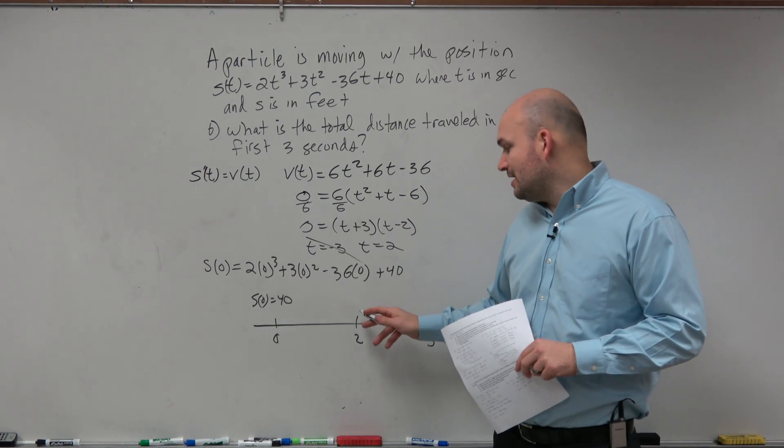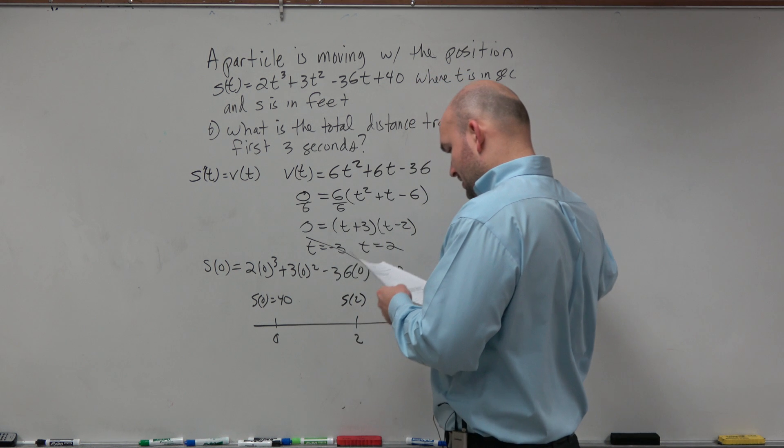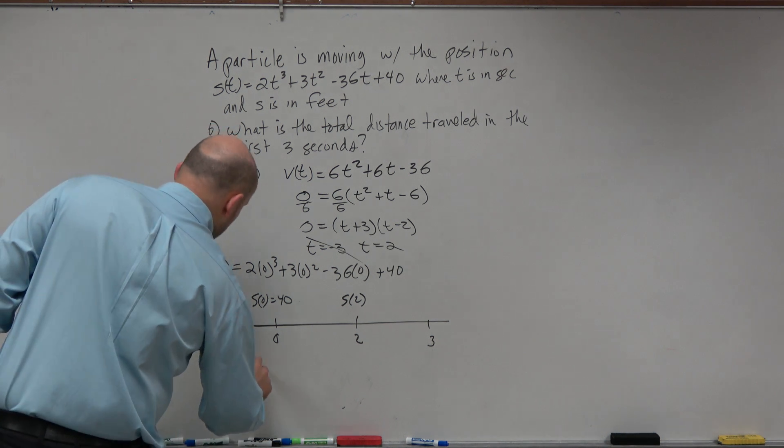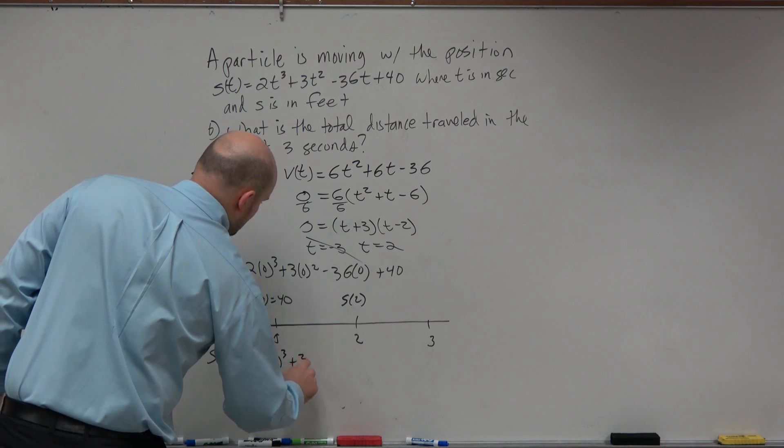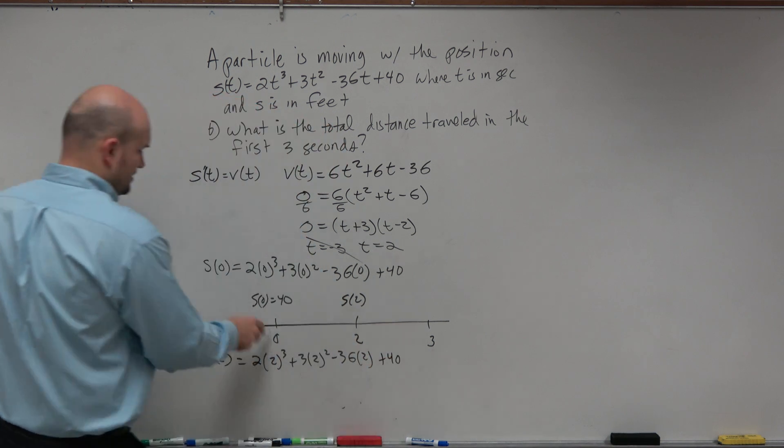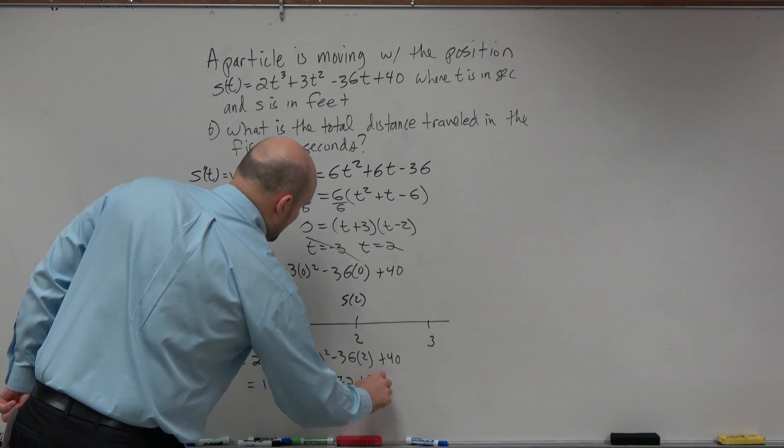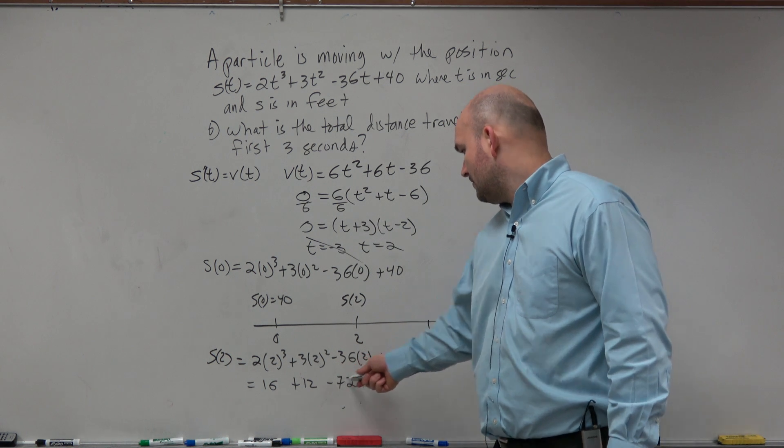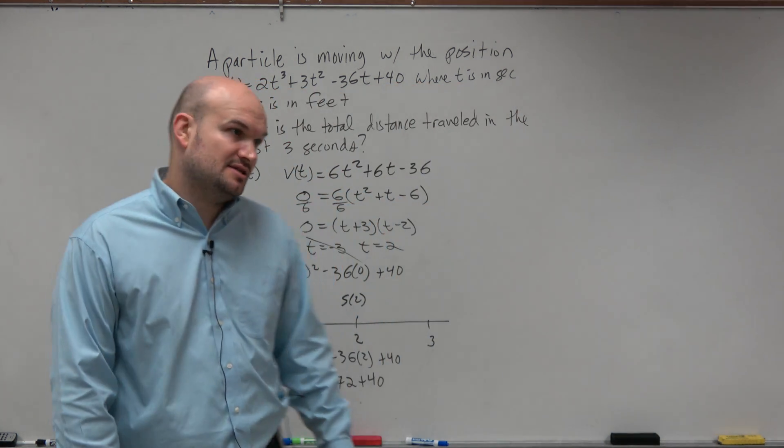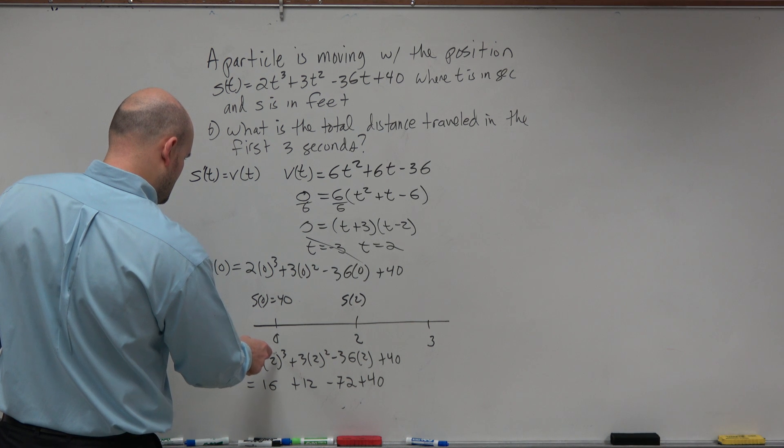Now, we want to go ahead and check in for s of 2. And going in and checking s of 2, so that's going to be 2 times 2 cubed plus 3 times 2 squared minus 36 times 2 plus 40. So that's 2 cubed is 8. So that equals 16. That's 4. So that's 12. That's going to be a negative 72 plus 40. So let's do that goes down to negative 32. That goes down to positive 38. So negative 4 minus 40 is going to be absolute value of that is 44.